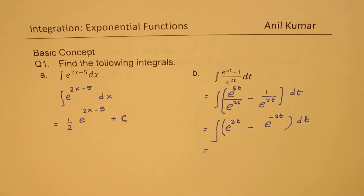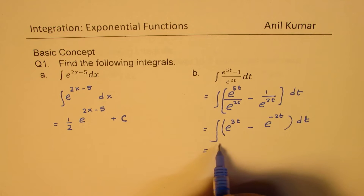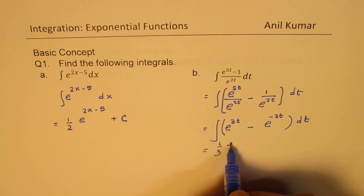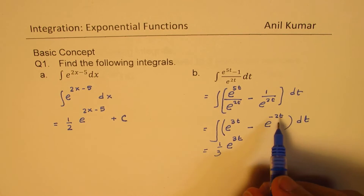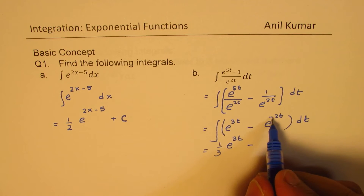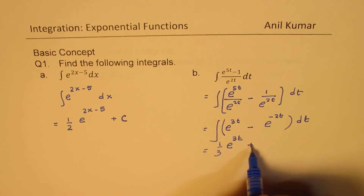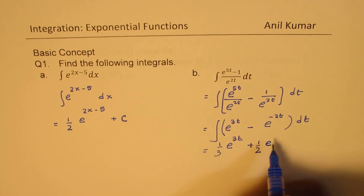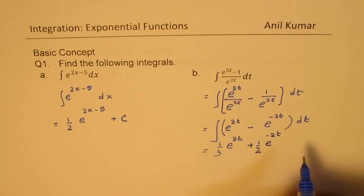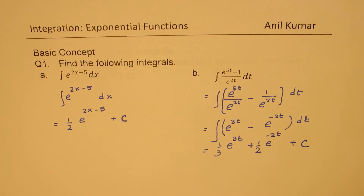When you integrate, you get 1 over 3 times e to the power of 3t. For the second term, the exponent gives minus 2, so that makes it plus half times e to the power of minus 2t, plus constant C. So that is the result when you integrate these exponential functions.